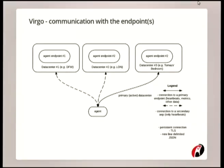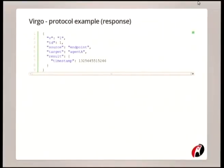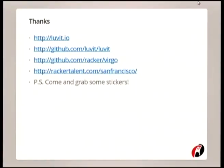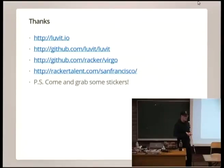Here's a quick diagram of our endpoint architecture. The agent connects to multiple endpoints for high availability reasons — if one of our data centers goes down, your agent can still send metrics to us and we can process them and send an alert. The agent establishes three persistent long-running connections, but actually only sends data — metrics and system information — over one connection. If that connection dies, a secondary connection is promoted to the primary connection.